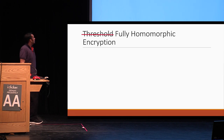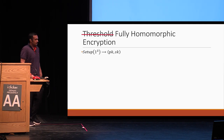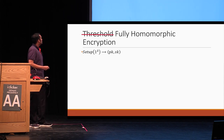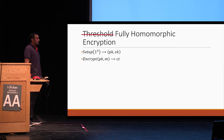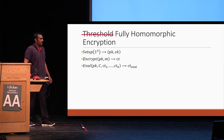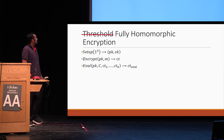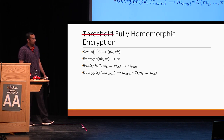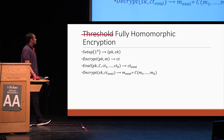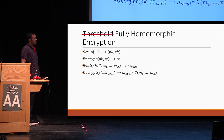Let's recall what fully homomorphic encryption is. In homomorphic encryption, you have four algorithms. There's a setup algorithm which takes in the security parameter and gives out a key pair — a public key and a secret key. Using the public key, you can encrypt any message to give out a ciphertext. Then there's an evaluate algorithm which takes the public key, the circuit, and a bunch of ciphertexts to give out an evaluated ciphertext. Then you can decrypt this evaluated ciphertext using the secret key to recover the evaluated message. We want this evaluated message to equal the circuit applied on M1 through Mk, where CT_i had encrypted message M_i.